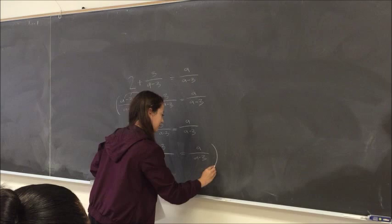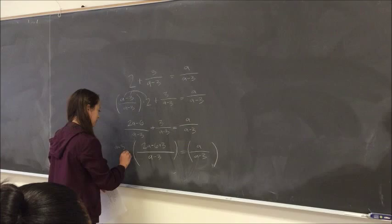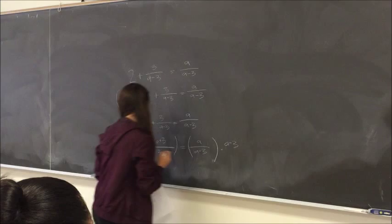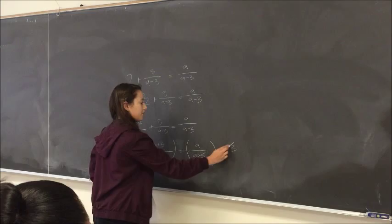And now what you can do is you can multiply all this, well, separated by A minus 3, equals A minus 3. And so this would cancel all of this, and these would cancel.